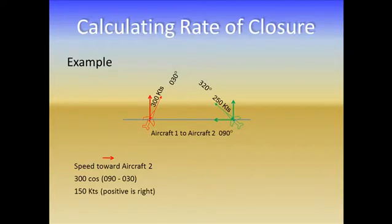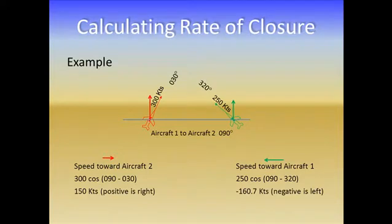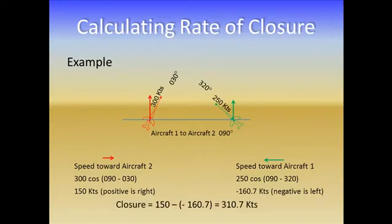Remember that vectors indicate direction and magnitude, so the sign of positive means to the right. Let's take a look at the X component of aircraft two, which is the speed of aircraft two toward aircraft one. We put in our numbers: 250 knots times the cosine of the angle — in this case, 090, the course from aircraft one to aircraft two, minus aircraft two's heading of 320 degrees. In this case, we end up with a negative number: negative 160.7 knots. Negative means a left direction. To get the combined closure, we take the difference: 150 knots minus negative 160.7, giving us about 311 knots.